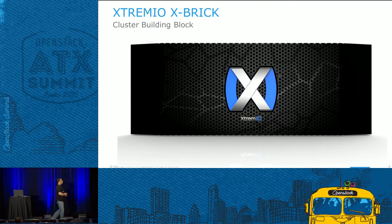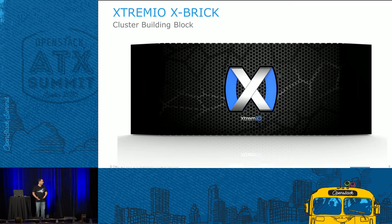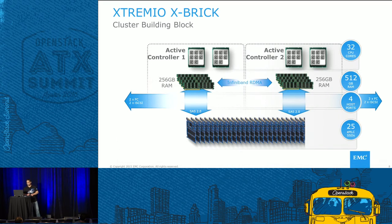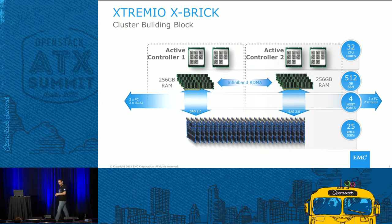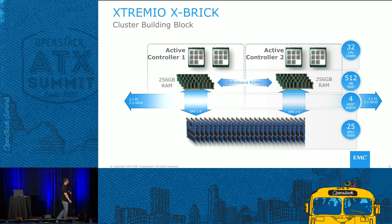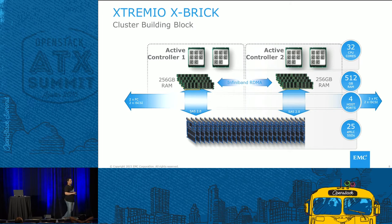So what is an X-BRIK? X-BRIK is a building block. You scale in the form of X-BRIKs. You start with one X-BRIK, can add another, and can scale up to eight X-BRIKs in a cluster. Inside an X-BRIK, there are two active-active controllers. Each controller has humongous RAM and plenty of CPU cores. It has Fibre Channel and two iSCSI ports for back-end connectivity. Each X-BRIK has 25 MLC drives. X-BRIKs are available in 10 terabyte, 20 terabyte, and 40 terabyte versions — these are raw physical capacity without factoring in any data reduction. No matter what size, it uses 25 drives, enabling consistent performance regardless of brick size.